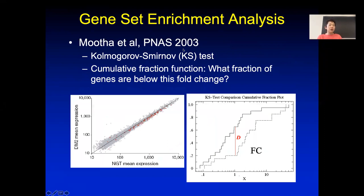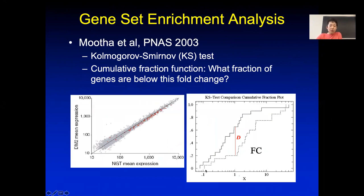The original study was published in 2003 — one of those algorithms cited by thousands of people. They used a test called the Kolmogorov-Smirnov test. This is a nonparametric test that calculates a cumulative fraction function, which asks what fraction of genes have this fold change or below. So if you look at all the genes between two conditions, fold change of 1 is no differential expression, fold change of 10 means the first condition is 10 times more, and fold change of 0.1 means the second condition is 10 times more.